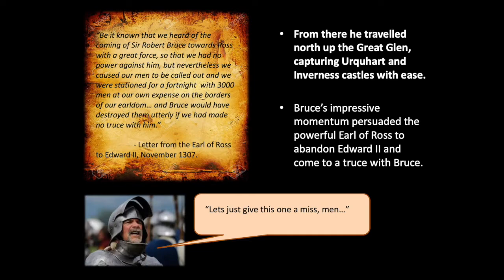When Bruce came up the Great Glen, we think he had an army of around 3,000 men — men coming off the successes of the summer 1307 campaign, having defeated the English at Loudoun Hill, gathering more supporters as they moved north through the kingdom. There was a core of disciplined and experienced veterans. The Earl of Ross probably did not have that in his force, and he knew Bruce would have simply rolled over him — so he played the most sensible option and gave this one a miss.